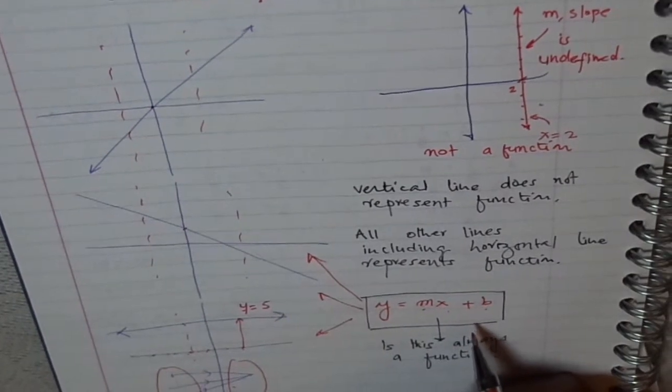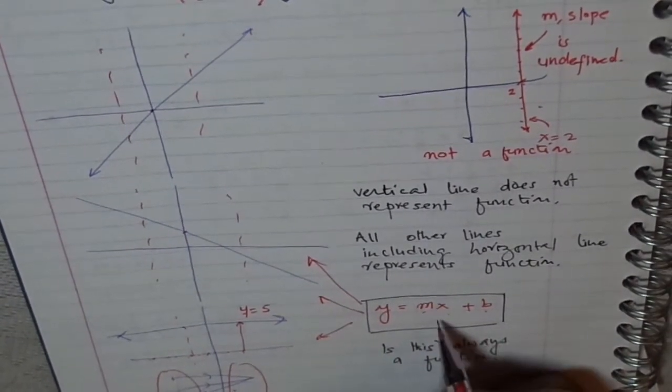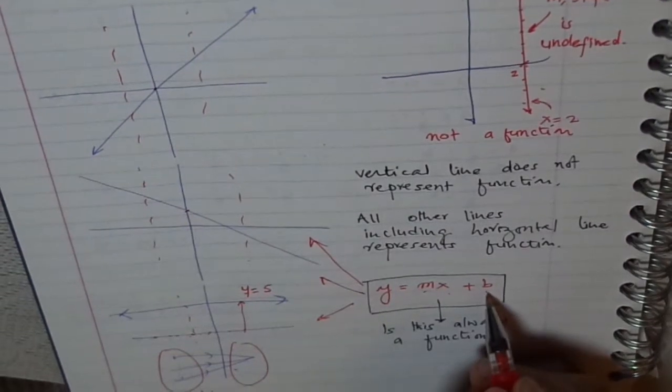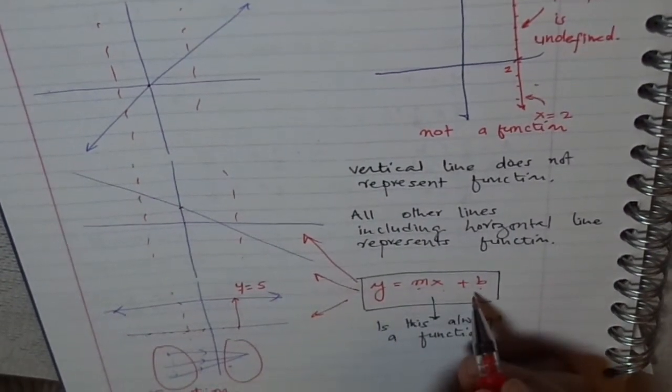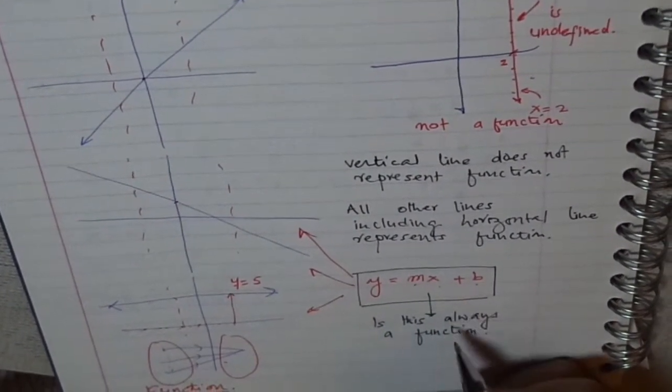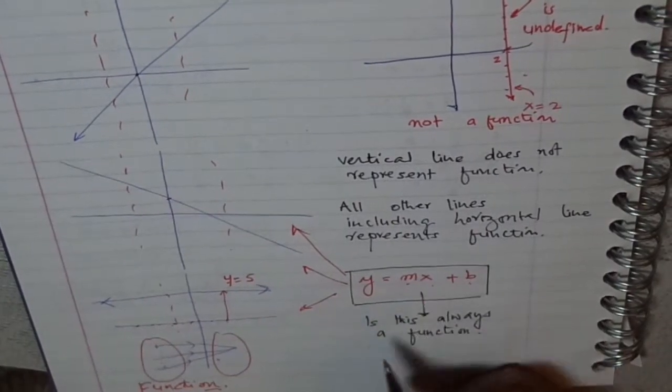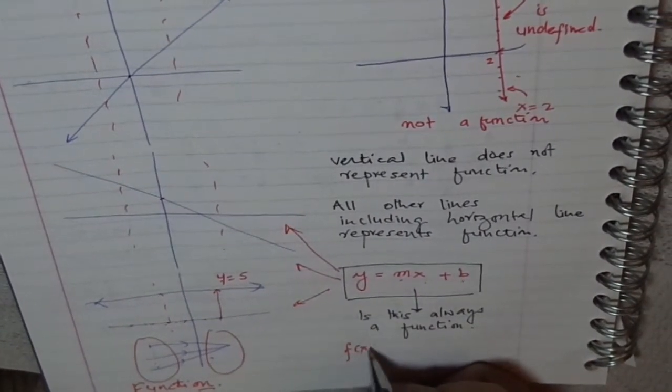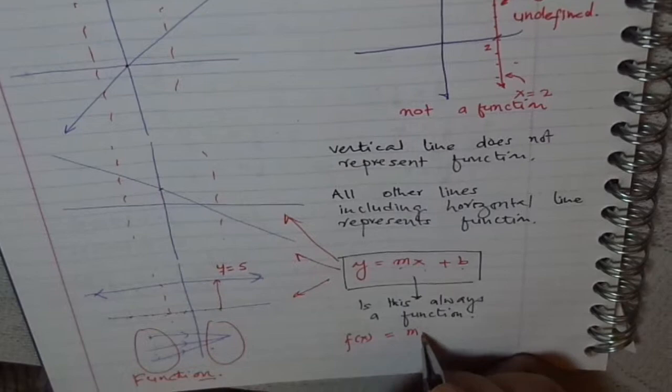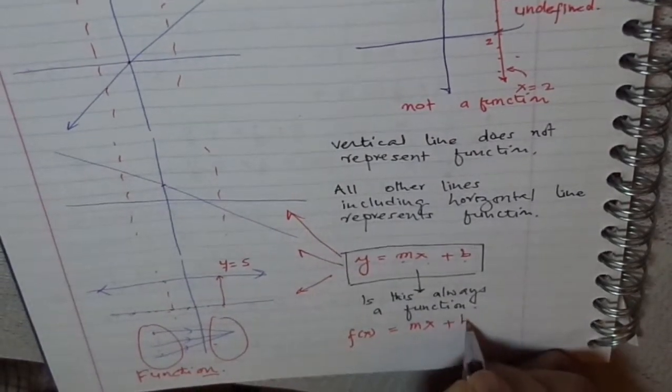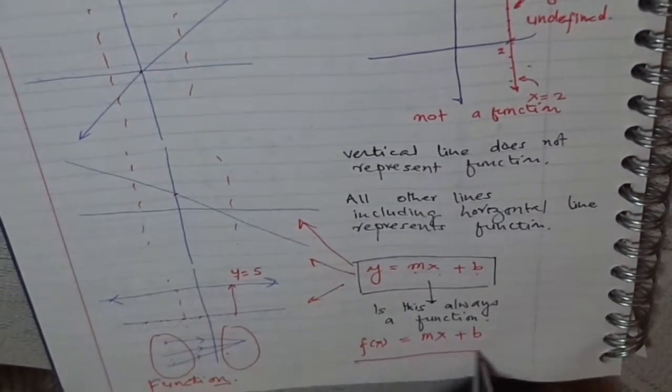Therefore, we can say that all lines represented in slope-intercept form y equals mx plus b will represent a function. So we can write this as f(x) equals mx plus b. Thank you.